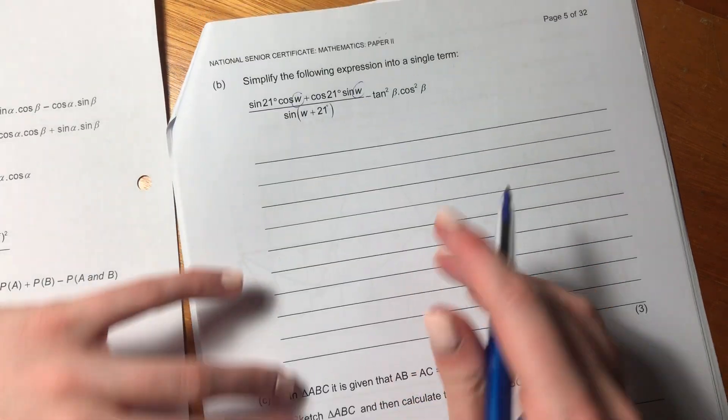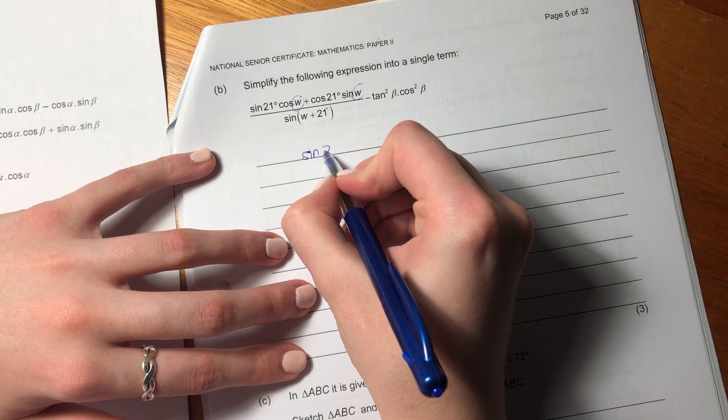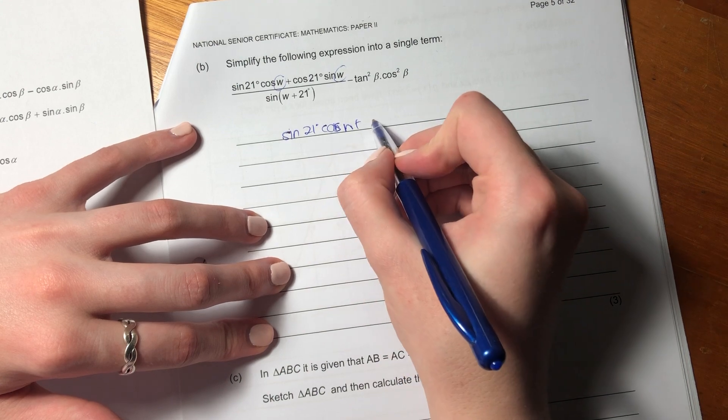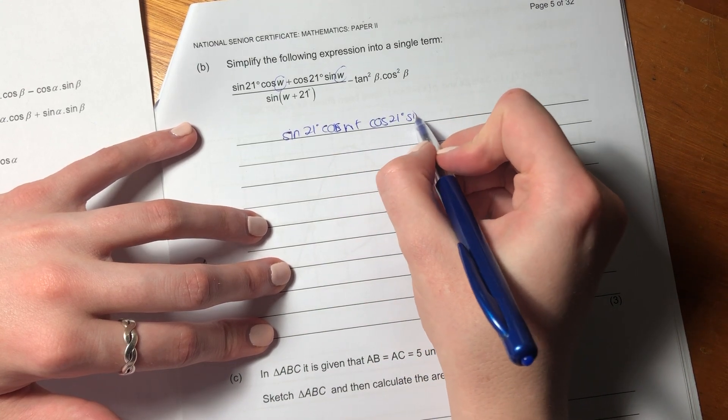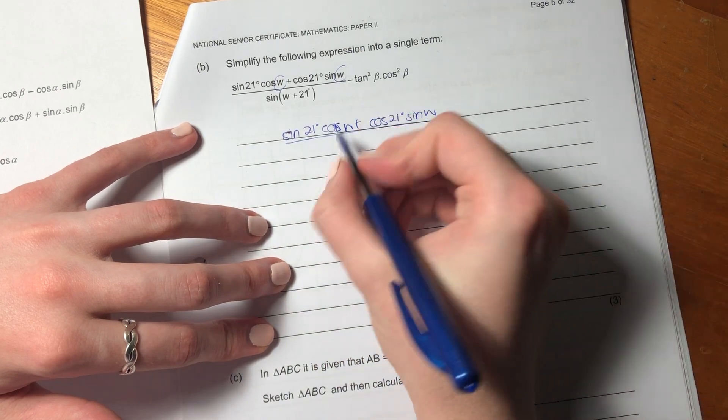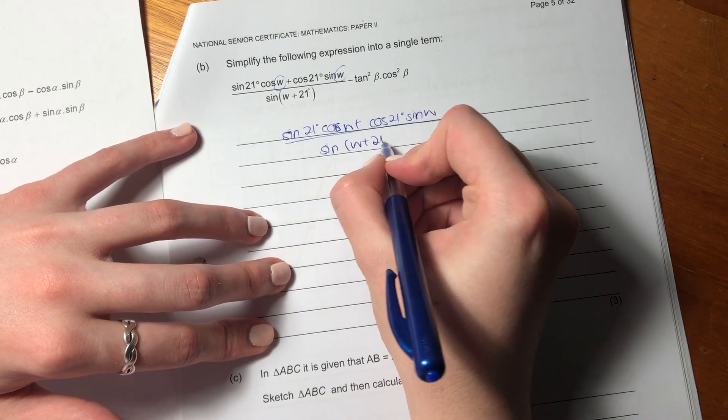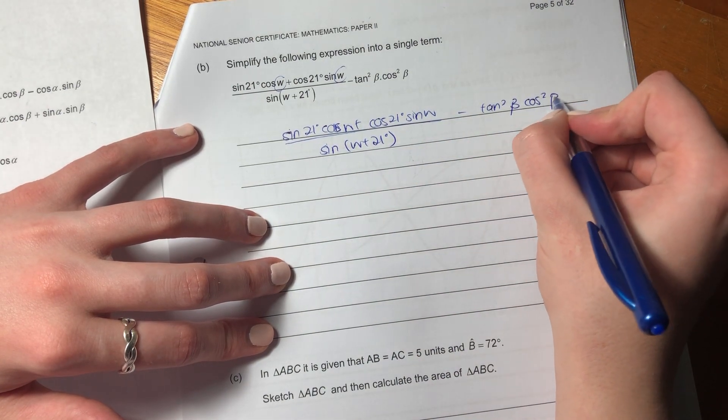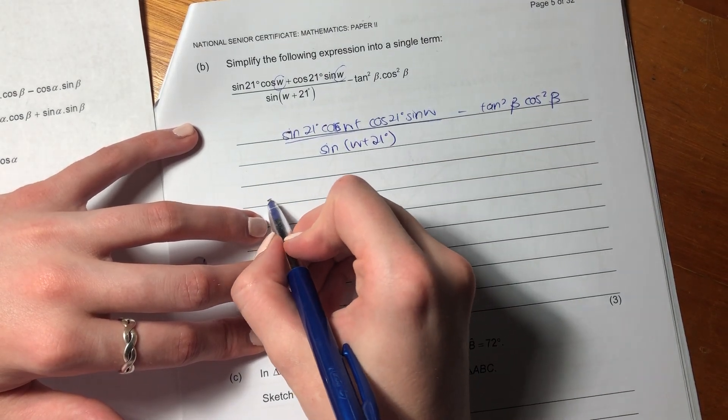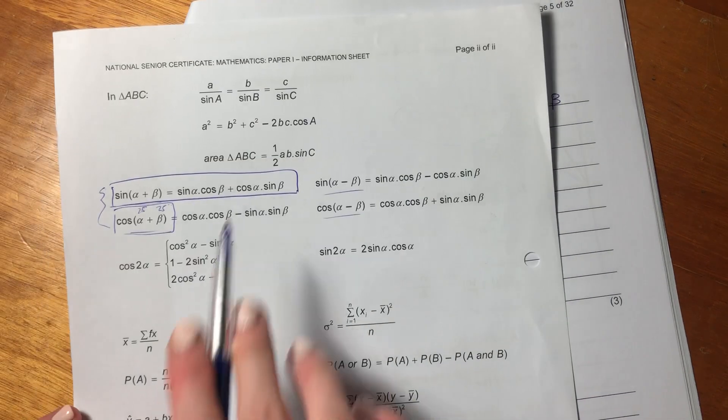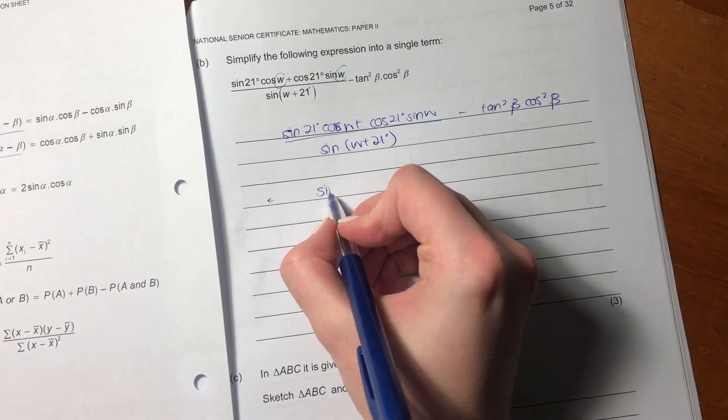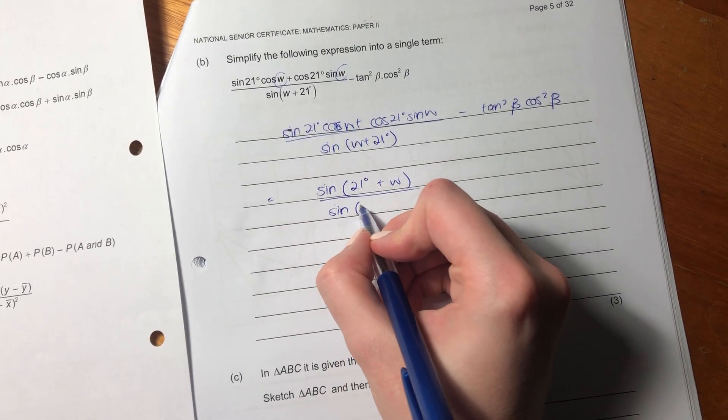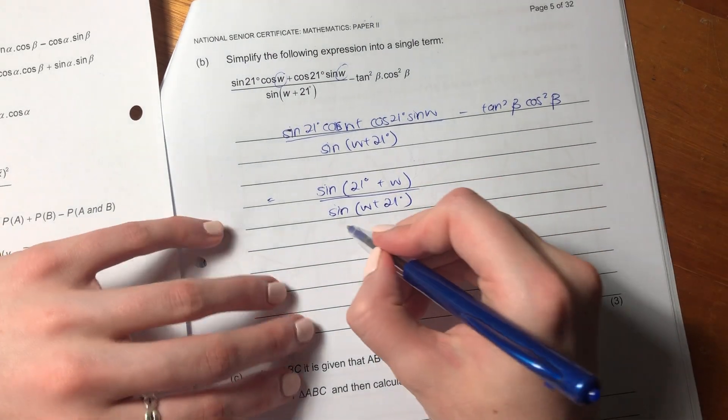So that's going to become, and it's always good practice to actually write out the question. So write it out, sine w plus 21 cos. It just helps the examiner follow your thought pattern. You want to always make it as easy as possible for the examiner to follow your thought pattern. So it is this identity here, so it's going to be sine(21 plus w). That's fantastic, because look, we actually have the same at the bottom, so those are inevitably going to cancel.